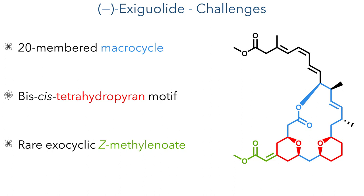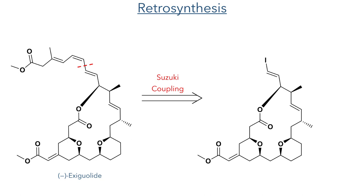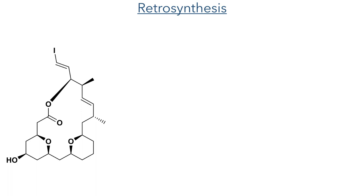The retrosynthetic strategy for this molecule starts with a Suzuki coupling, which they would use to construct the polyene ester side chain. The other ester, present as the Z-methylene-γ8, could be introduced using a Horner-Wadsworth-Emmons reaction using a chiral phosphonate. The researchers would construct the two pyran rings in two separate steps.